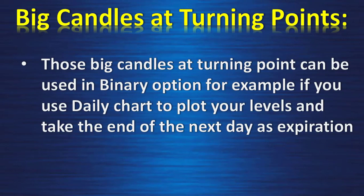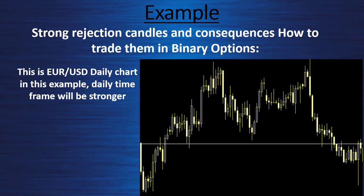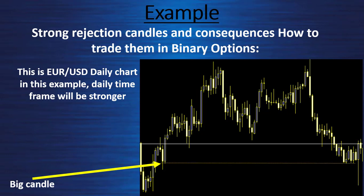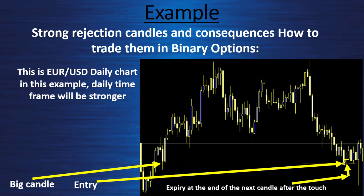Those big candles at turning points can be used in binary options. For example, if you use the daily chart to plot your levels and take the end of the next day as expiration. Let's look at an example. I take the EURUSD daily chart — for me the daily time frame is the strongest. We have a big candle creating a turning point. I draw a line at the average of the week, and my entry is exactly at the level. For expiration, the end of the next candle after the touch — it's a winning trade.